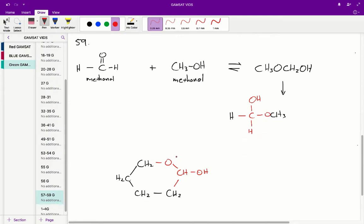As for option 3, well, we have this ring structure. However, just because it's a ring doesn't mean that it can't be a hemiacetyl. And indeed, we have that hemiacetyl structure highlighted in red.